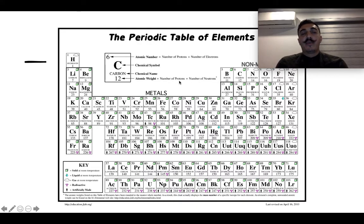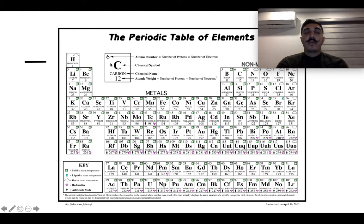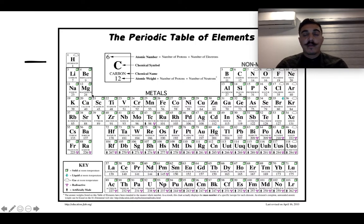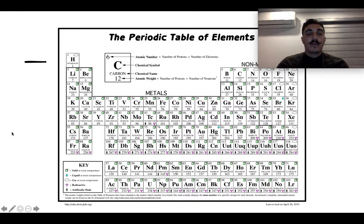We're not going to get into detail about valence electrons and different combinations, but just a general idea for when we start talking about the different types of molecules in our body. The atomic number tells you the protons and the electrons; the mass tells you protons plus neutrons. For example, magnesium has atomic number 12, so it has 12 protons, 12 electrons, and atomic mass 24, meaning 12 neutrons.